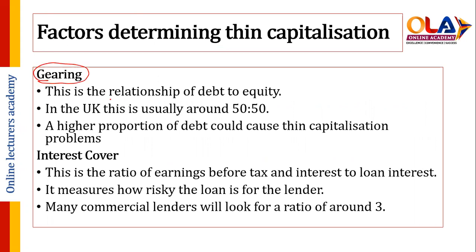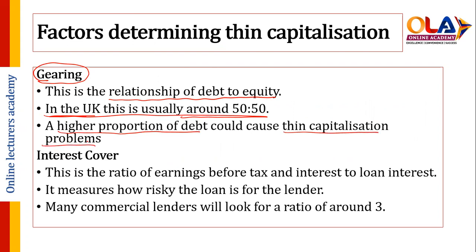The first factor determining thin capitalization is the gearing ratio — the relationship between debt and equity finance. In the UK this is usually around 50:50. A higher proportion of debt could cause a thin capitalization problem, meaning the debt level must be within the 50:50 threshold.